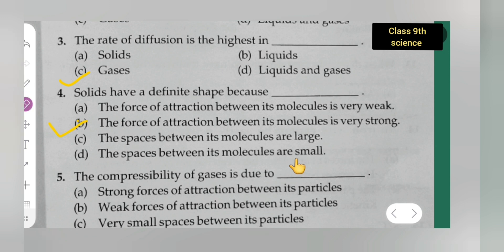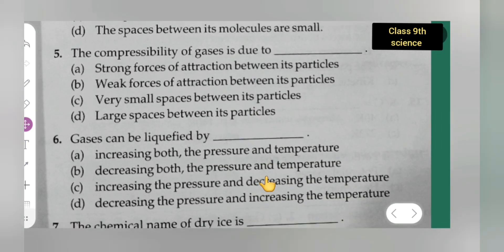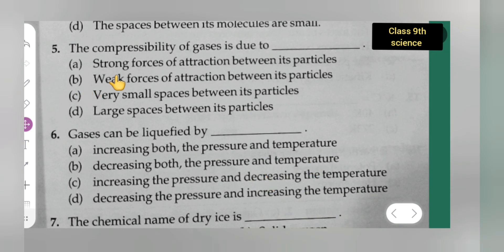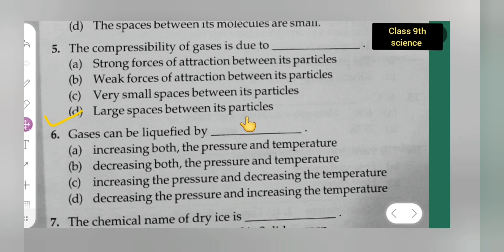Question 5: The compressibility of gases is due to — option A is strong forces of attraction, option B is big forces of attraction, option C is very small space between particles, option D is large spaces between particles. The correct answer is option D — large spaces between its particles.